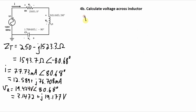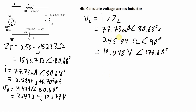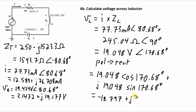Using the same method to calculate the voltage across the inductor — current times inductor impedance — I multiply the magnitude of the current times the magnitude of the impedance and add the phase angles to get 19.048 volts with a phase angle of 170.68 degrees. Converting to rectangular coordinates, the voltage across the inductor is −18.797 + j3.0848 volts.